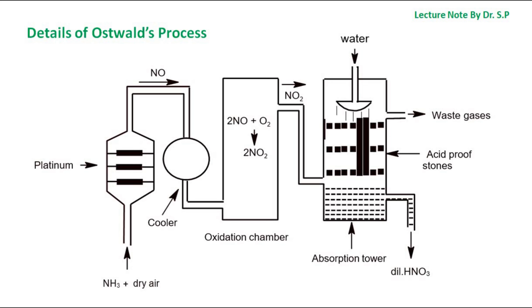This nitrogen dioxide is then passed into the absorption tower. In the absorption tower, water is showered from the top of the chamber as shown in the diagram. This chamber is made of acid-proof stone. The waste gases escape from the top of the chamber and nitric acid is collected from the bottom.